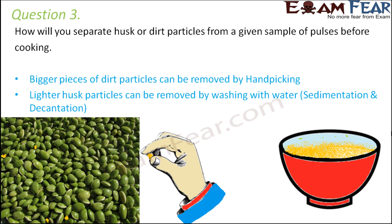The lighter husk particles can be removed by washing with water. When you wash the pulses with water and leave them undisturbed, the husks, being lighter, float on the surface of the water. Then by decantation — removing the water along with the floating dirt — you can get clean pulses. This is preferred over winnowing when the lighter husk particles are present in very small numbers, making sedimentation and decantation more effective.